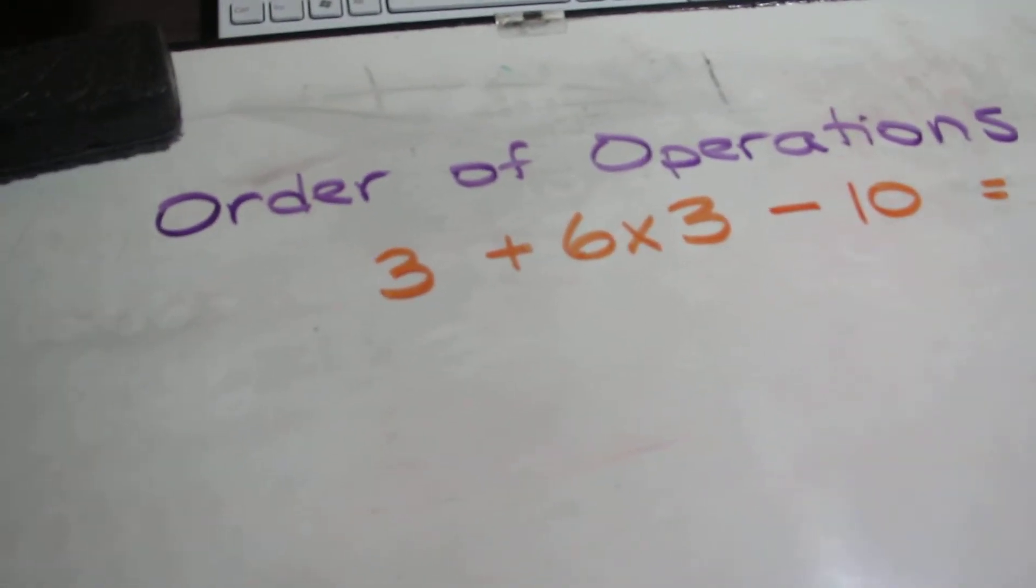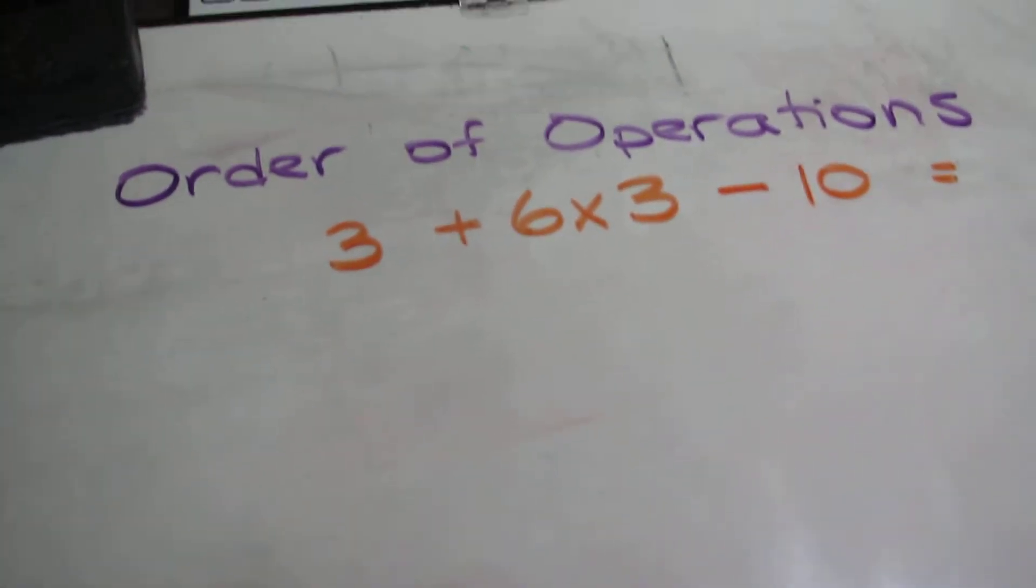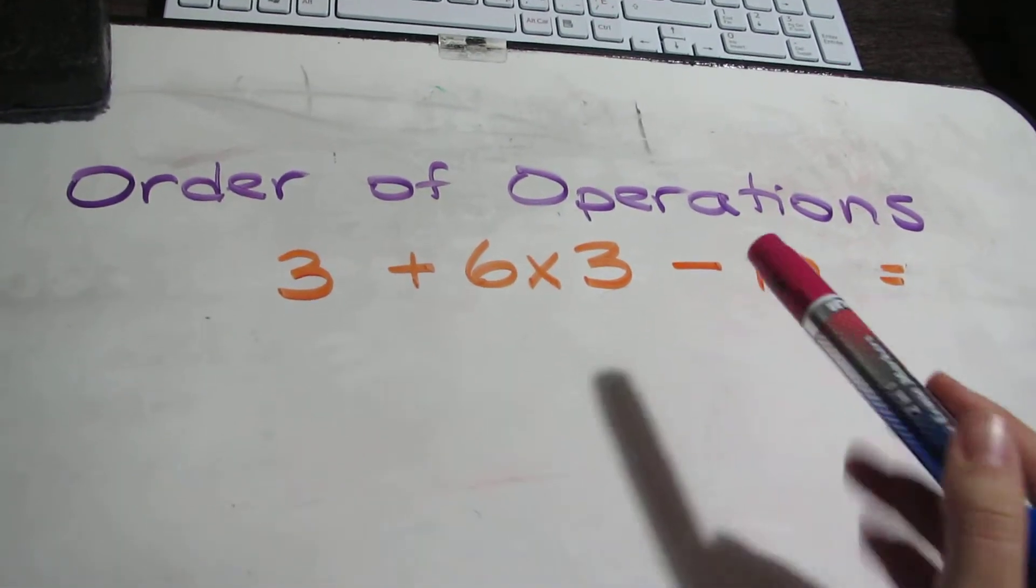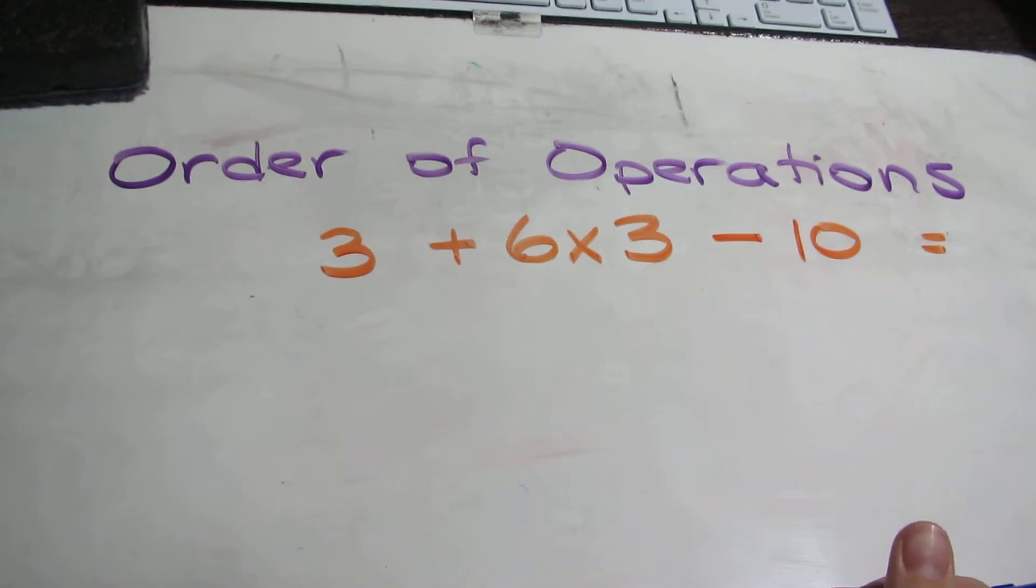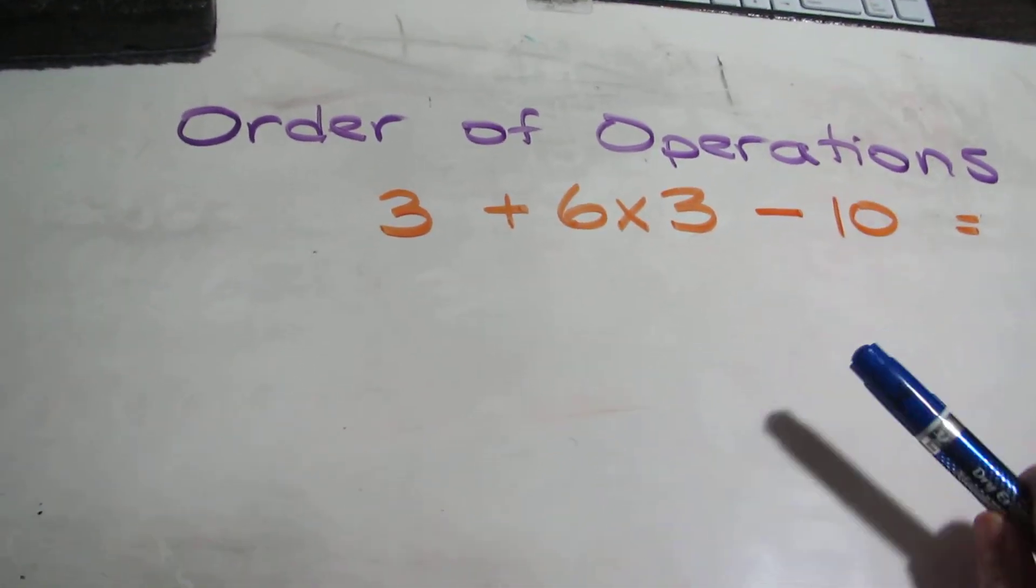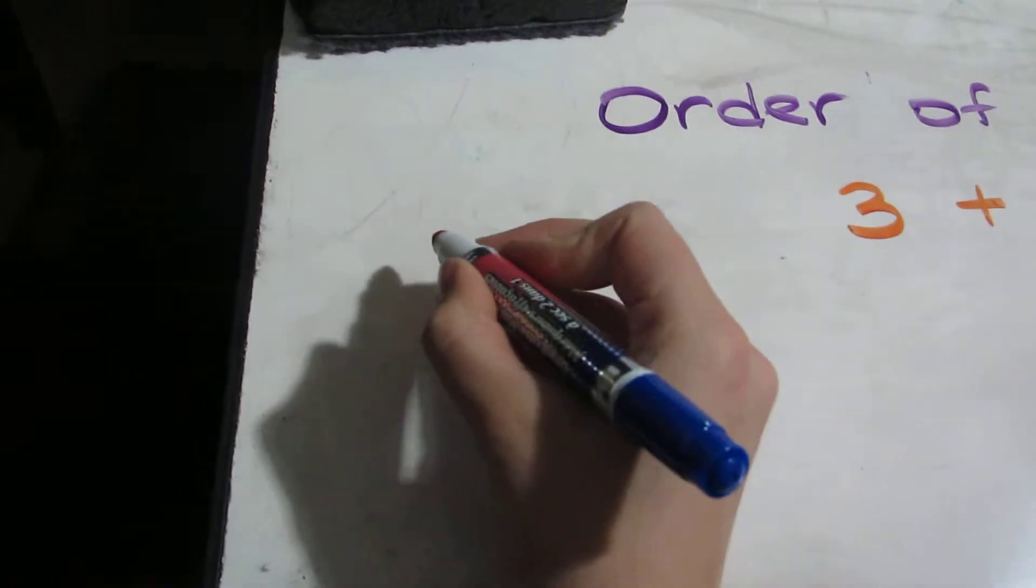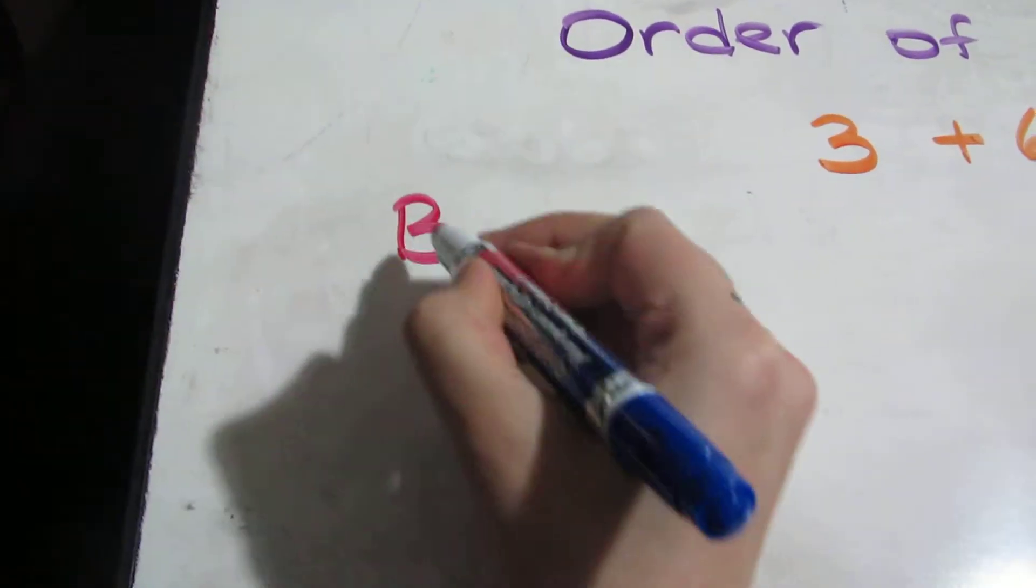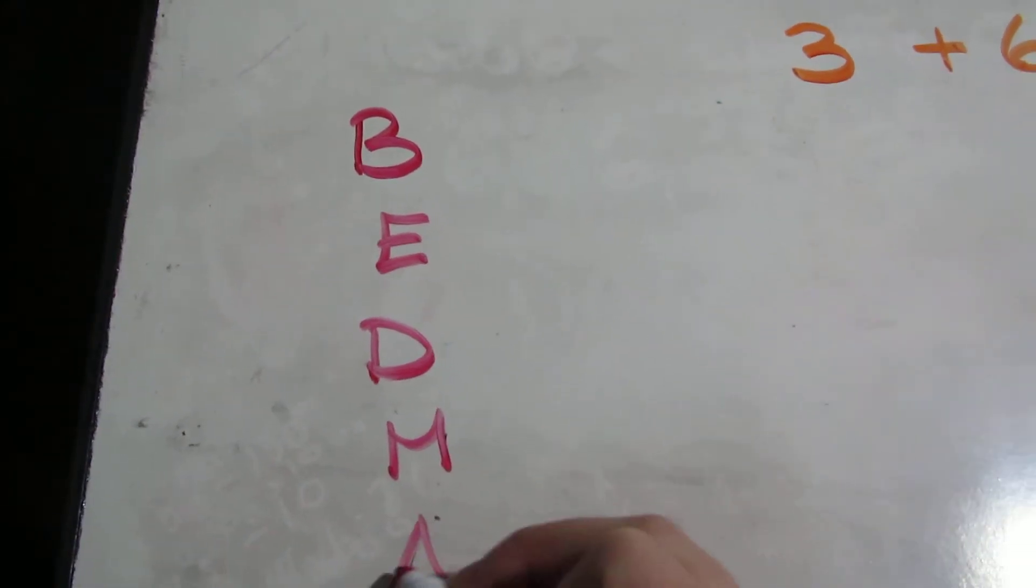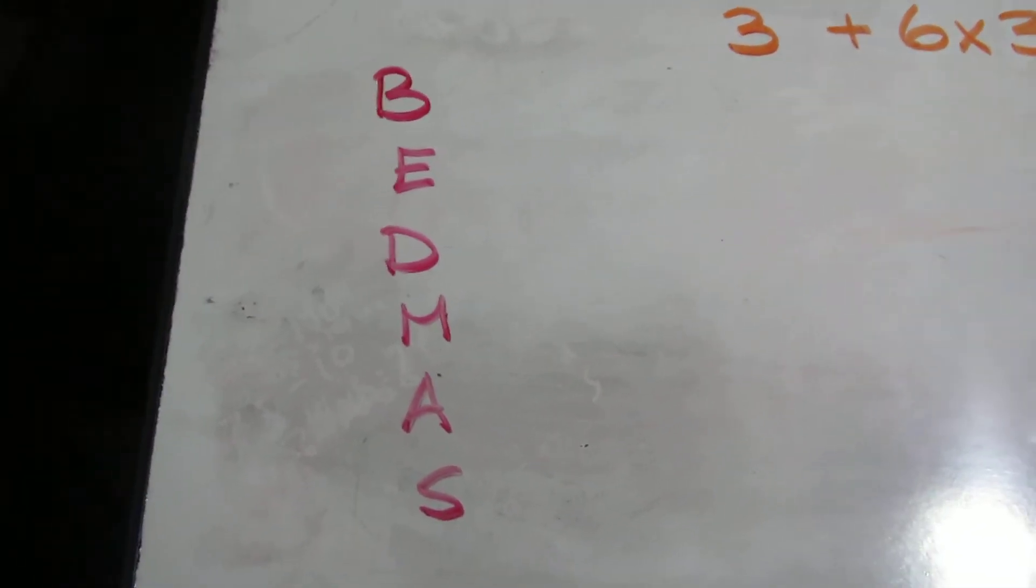This video is about the order of operations, or how to do many different operations in one equation at one time. The trick for this is our wonderful little word called BEDMAS. Let's write this down to remind ourselves: BEDMAS.